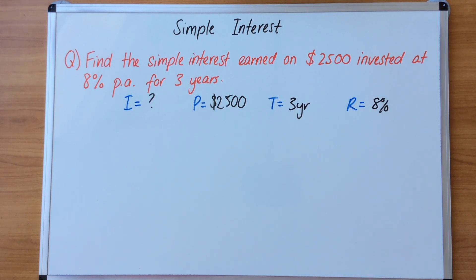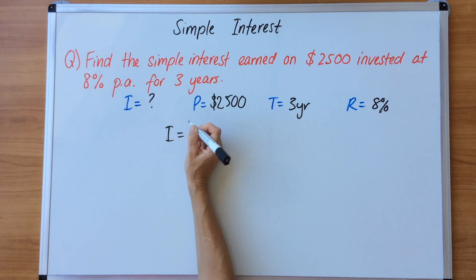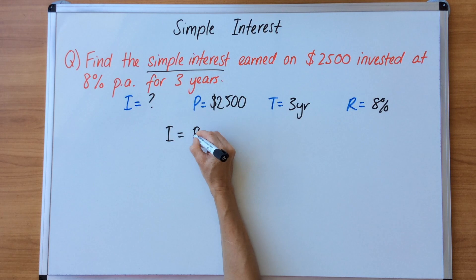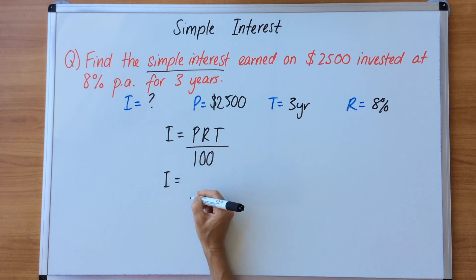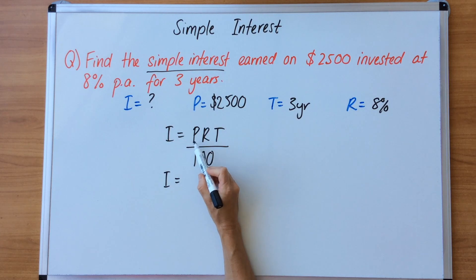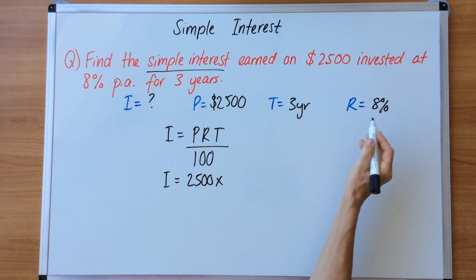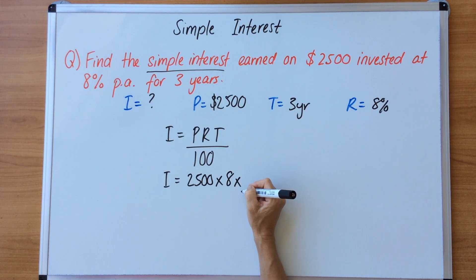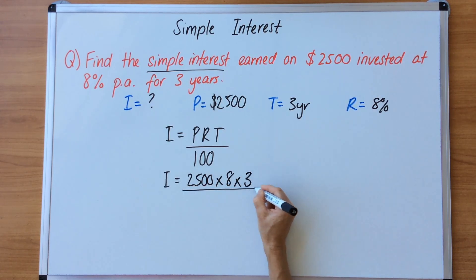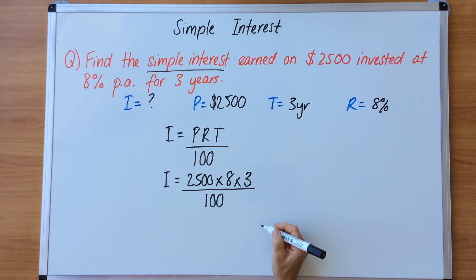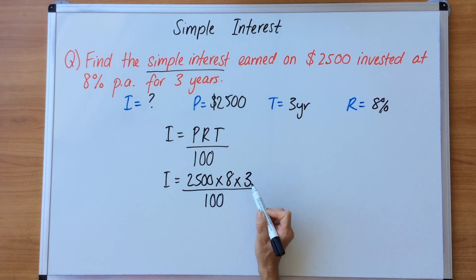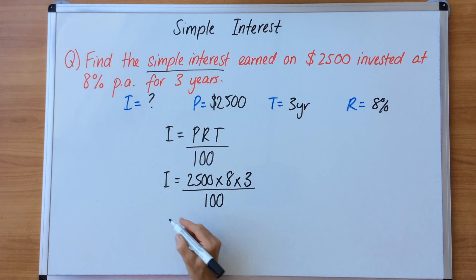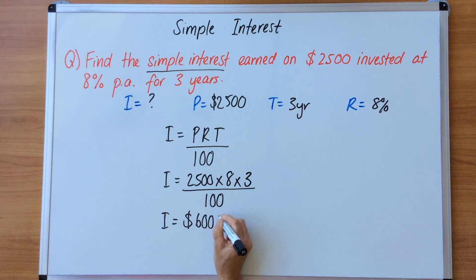Now write the rule: I equals PRT divided by 100. Working down the page, we substitute the values in — P is 2,500, multiplied by 8 for the rate, multiplied by 3 for the time, divided by 100. Using your calculator, multiply the top line and then divide by 100: 2,500 × 8 × 3 ÷ 100 gives a value of $600.